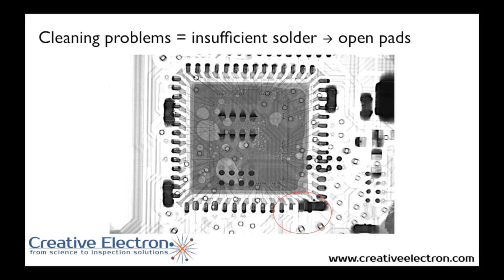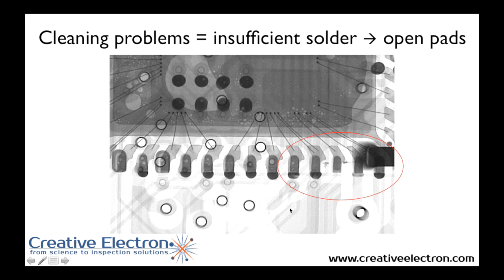Here's one example of how you can use your x-ray inspection system to find cleaning problems. In this case you can see a QFN where one of the openings in the stencil was blocked by solder — it wasn't cleaned properly — and as a result there was an insufficient amount of solder deposited on the board, which then caused open pads. You can zoom in and see that on two pads there's no fillet; there wasn't enough solder applied to create a reliable solder connection.